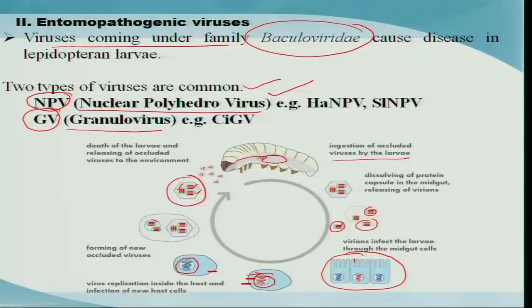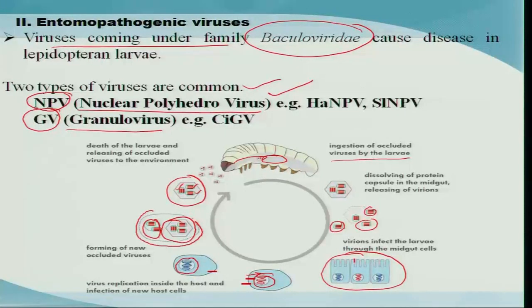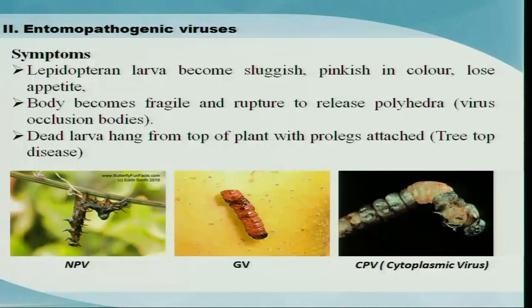The viral nuclear material binds with the host nuclear material and starts replicating, producing viral bodies inside the host cell. Some of these virions get embedded within polyhedral bodies. This ultimately leads to the death of the whole cell and then the death of the host. After the host dies, the polyhedral bodies are released outside and dispersed to infect other insect larvae.